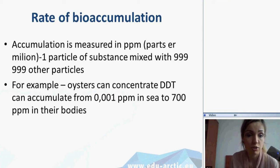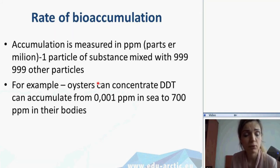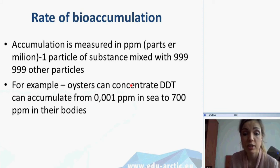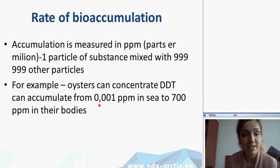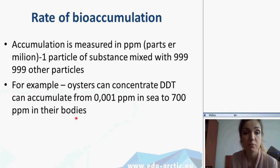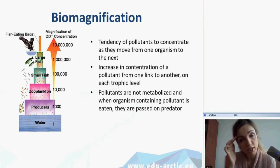Accumulation is measured in ppm — parts per million. For example, oysters can concentrate DDT from 0.001 ppm in seawater to 700 ppm in their body — a very high rate of accumulation.